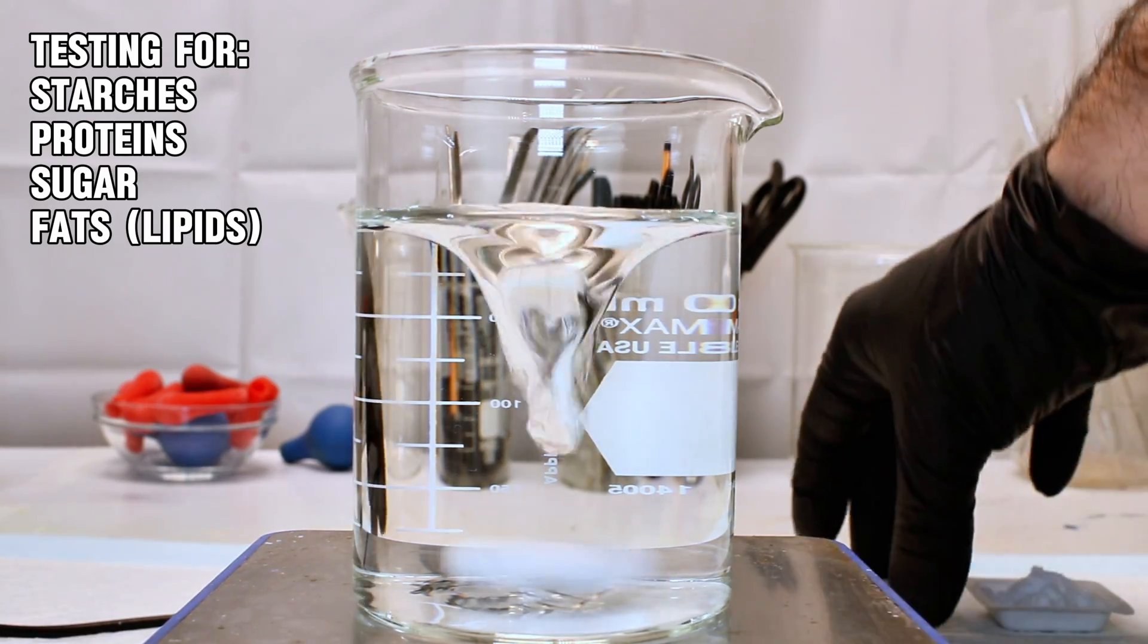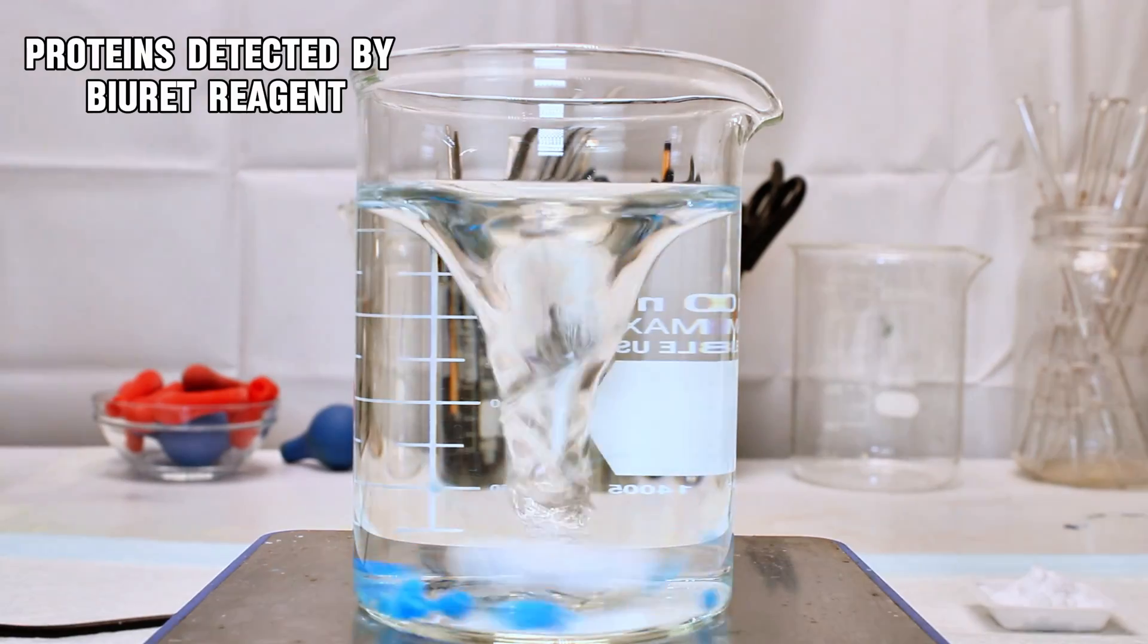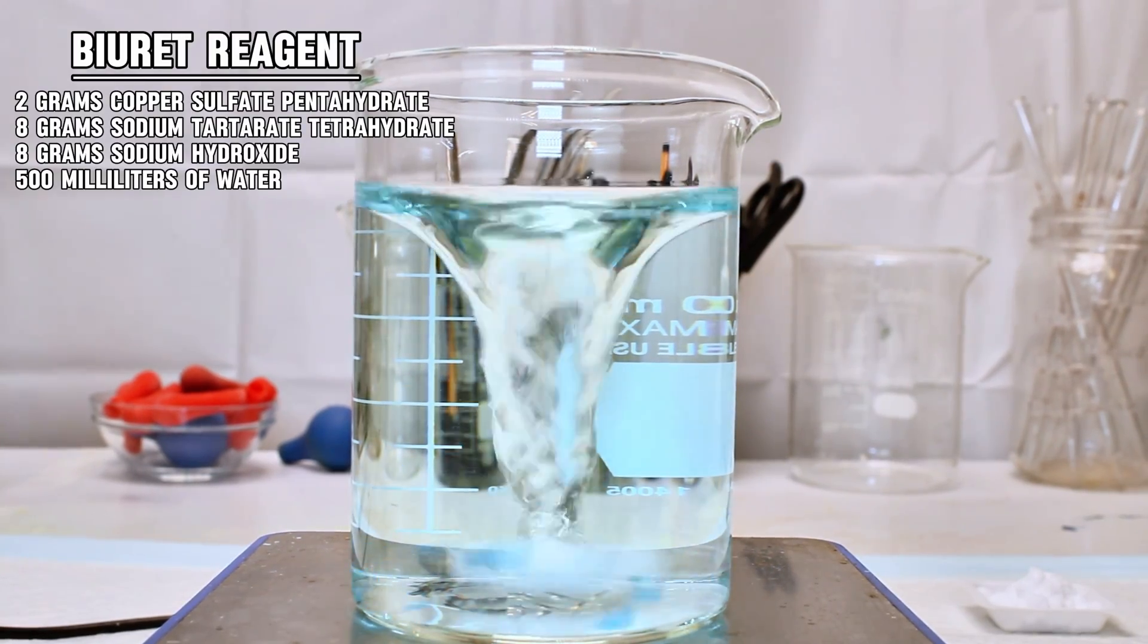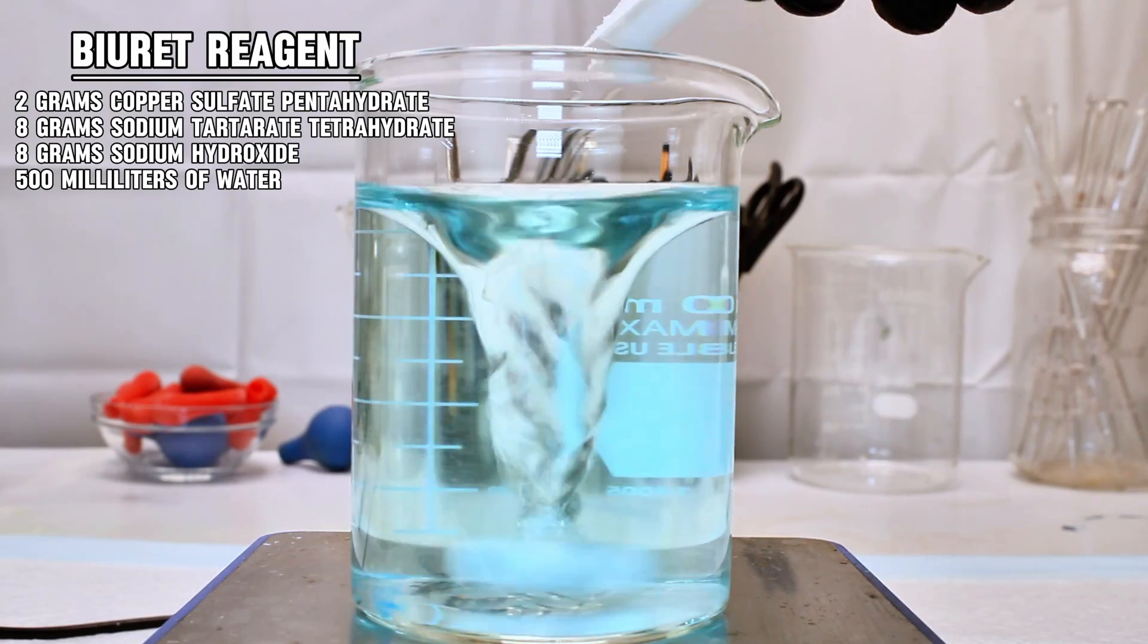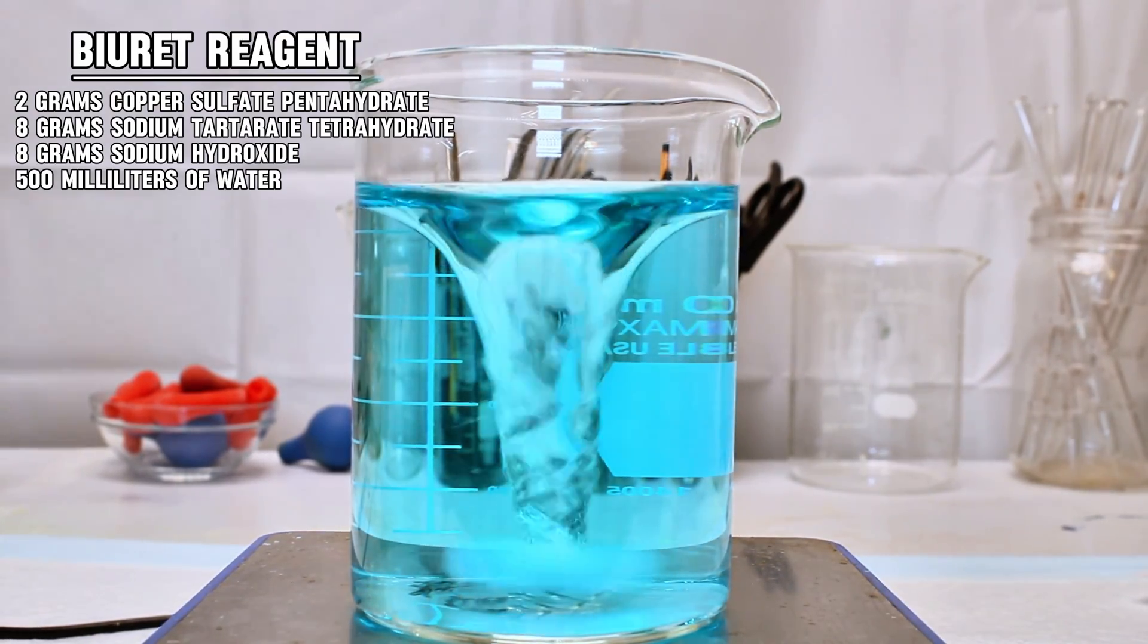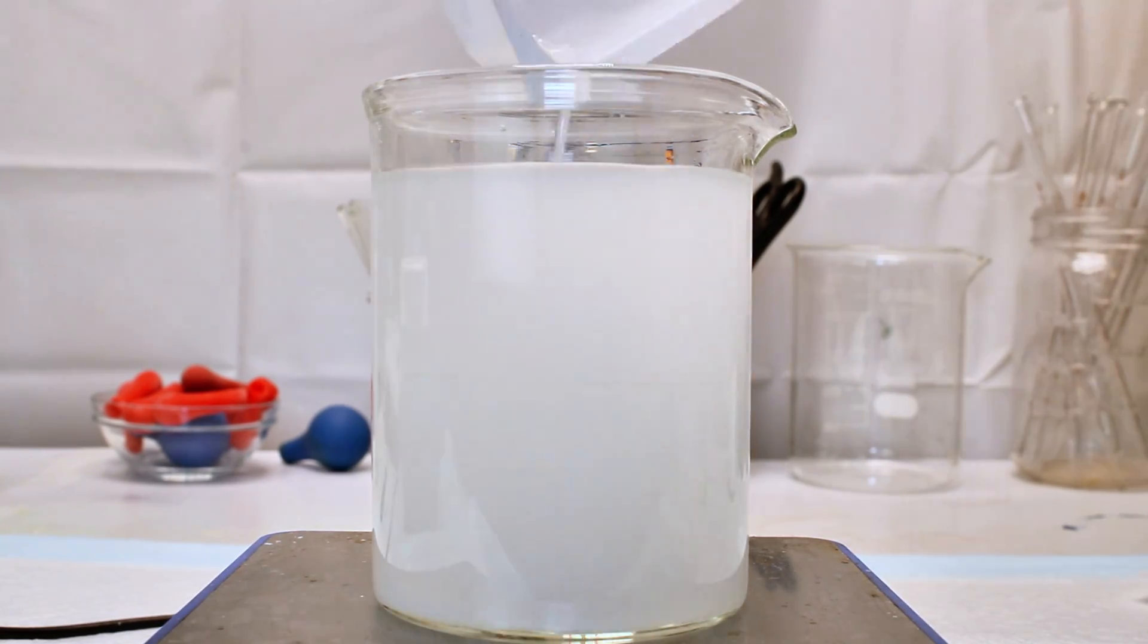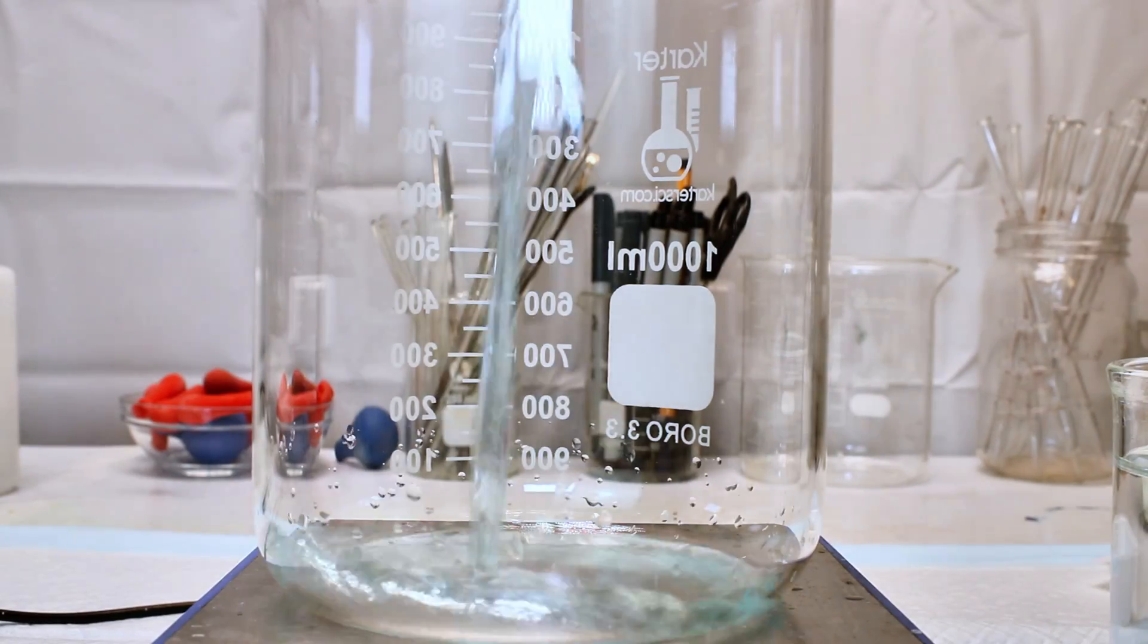To that end, the first thing I needed to do was make a solution that can detect the presence of proteins, and the easiest is the Biuret reagent. To make this reagent, I first dissolved 2 grams of copper sulfate pentahydrate and 8 grams of sodium tartrate tetrahydrate in 200 milliliters of distilled water. In a separate beaker, I then dissolved 8 grams of sodium hydroxide in another 200 milliliters of water, which I then slowly added to the blue solution of copper sulfate and sodium tartrate.